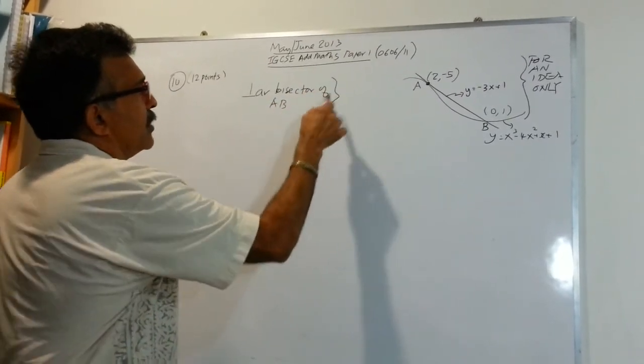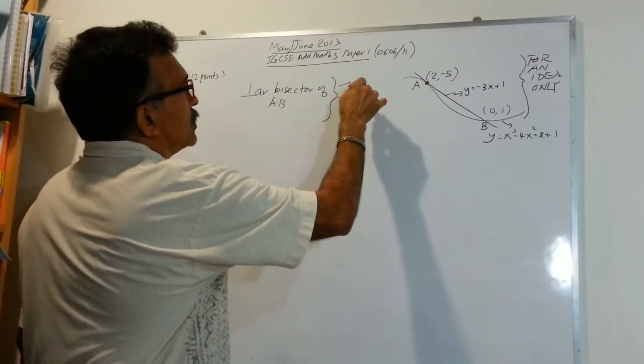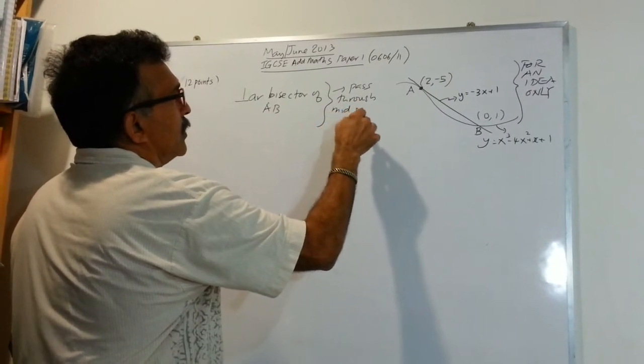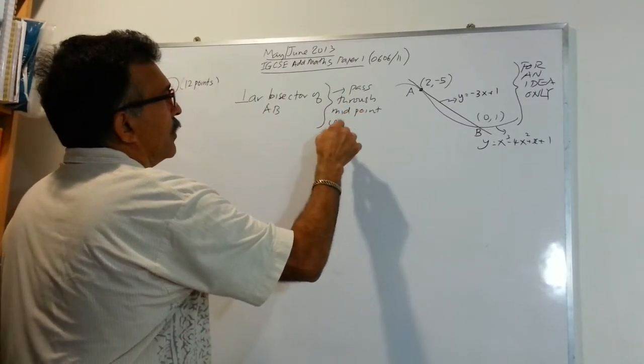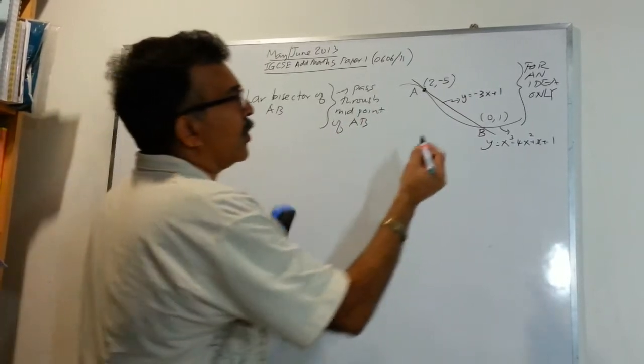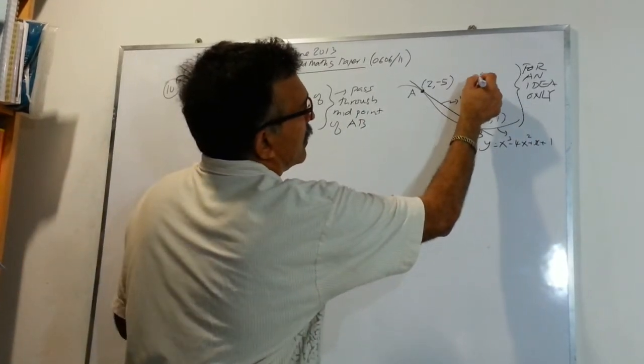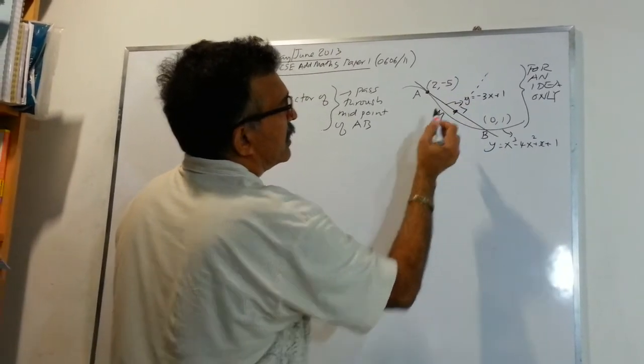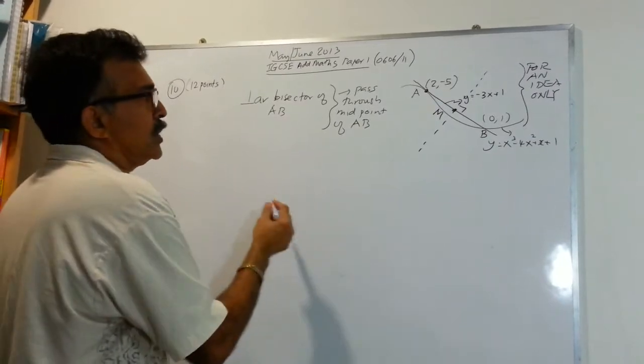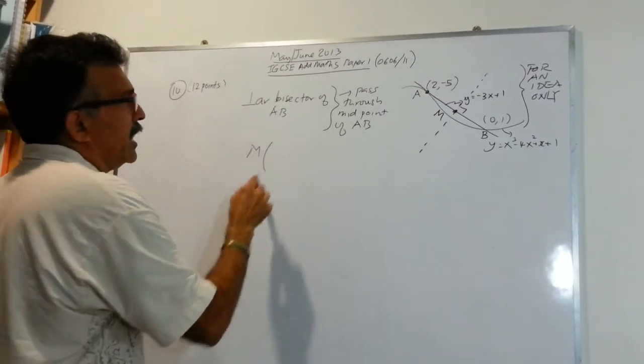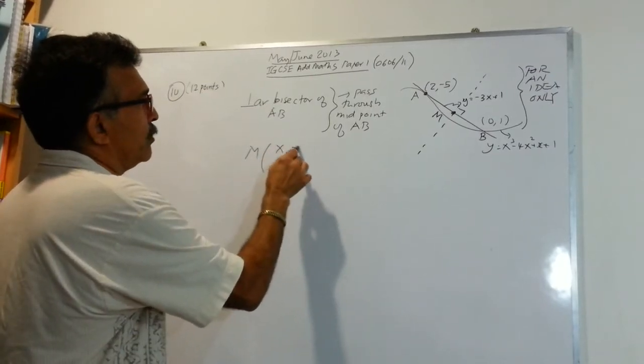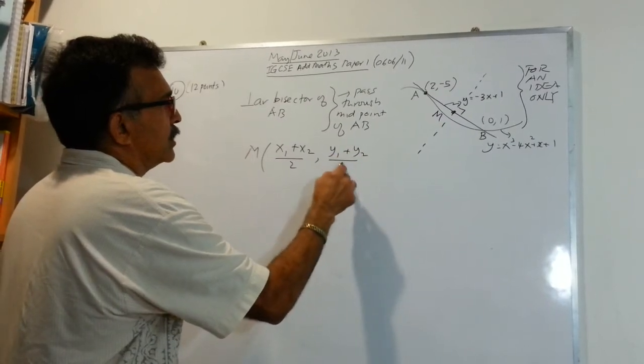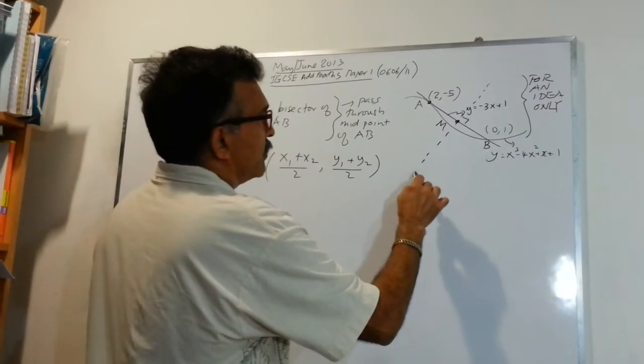Now, this perpendicular bisector of AB, it will pass through the midpoint of AB. Midpoint of AB. So, let's draw one line here. This is the perpendicular bisector. This is the midpoint. Let's label it M. So, M will be x1 plus x2, let me write the formula. x1 plus x2 divided by 2, y1 plus y2 divided by 2. So, in our case, we can write the coordinates of M.